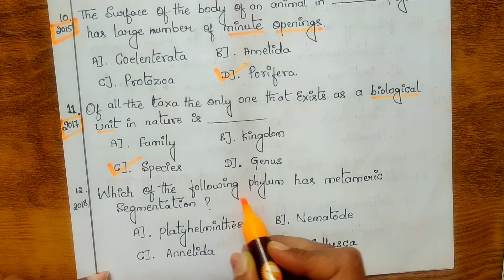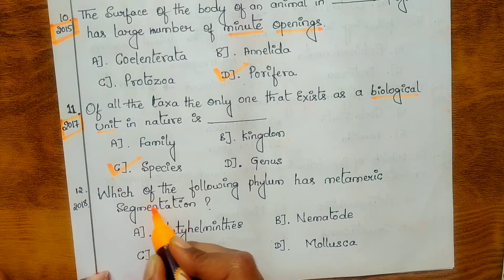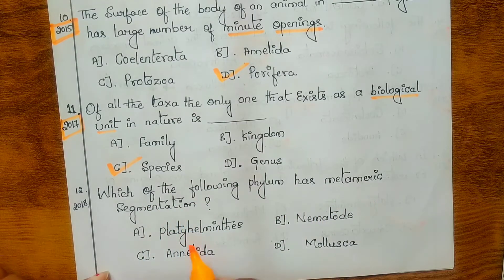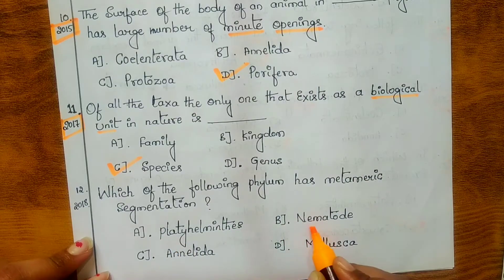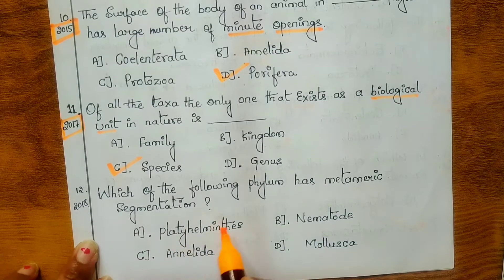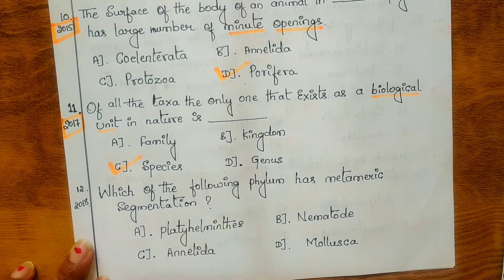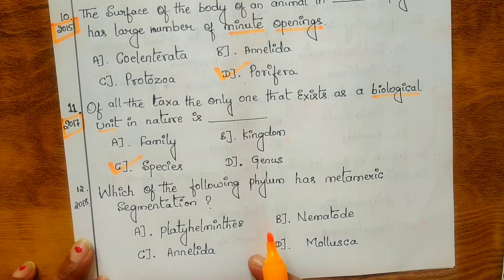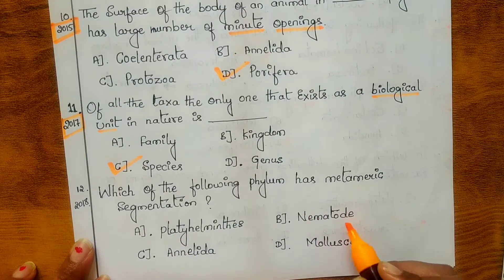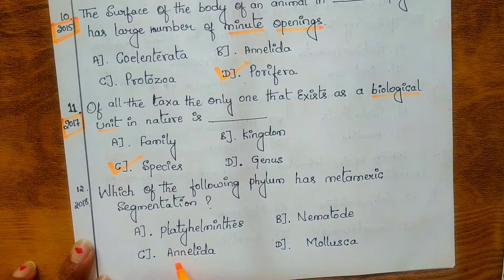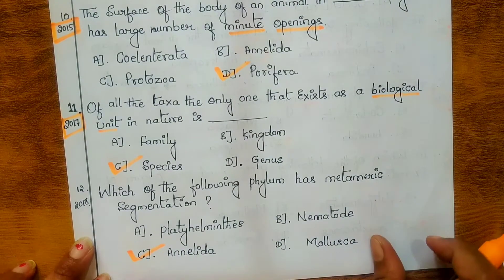Twelfth question: which of the following phyla has metameric segmentation? Options are: A. Platyhelminthes, B. Nematoda, C. Annelida, D. Mollusca. Platyhelminthes don't have metameric segmentation, as explained in the previous animal kingdom video. Nematoda are unsegmented, and Mollusca are also unsegmented. Annelida do have metameric segmentation, so the answer is C — Annelida.